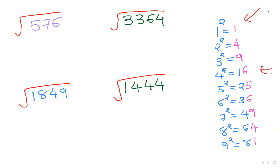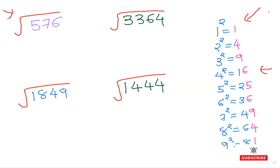Now, notice the last digits of these squares — I've highlighted them in a different color. We'll start with a three-digit number to understand the method, then move to four-digit numbers, and eventually five-digit numbers. The first step to get the square root is to look at the last digit.